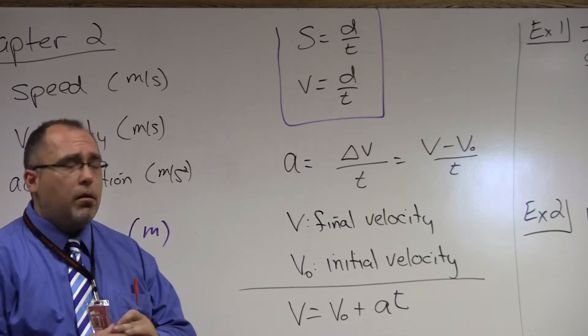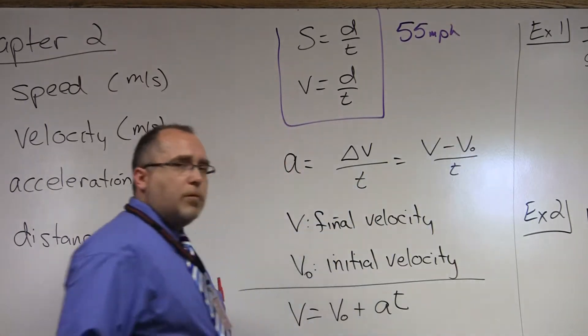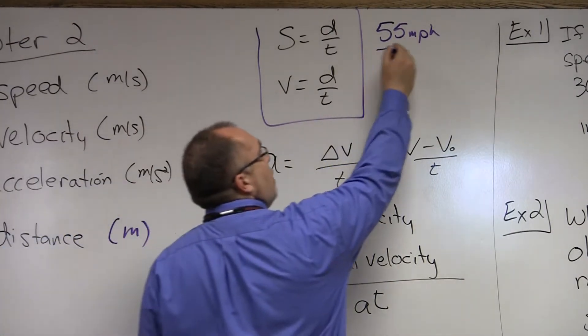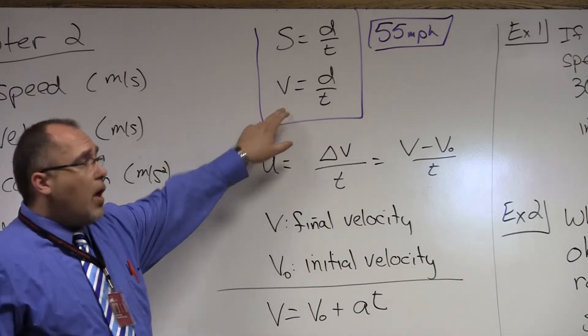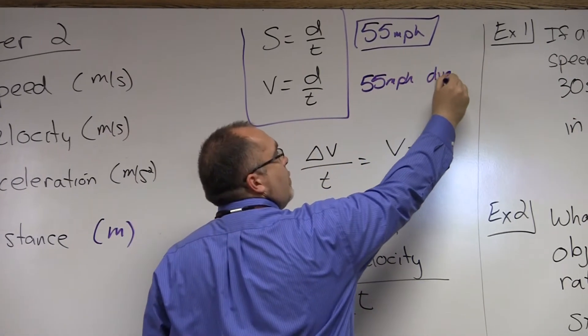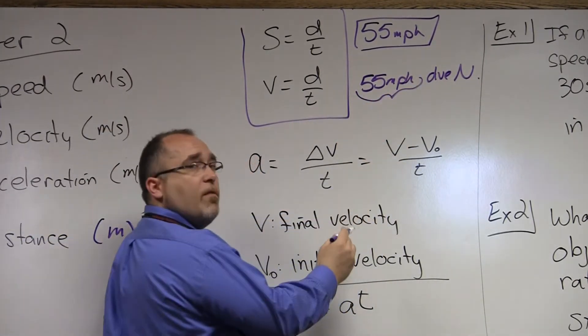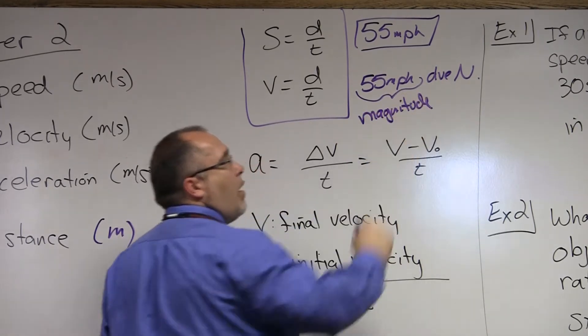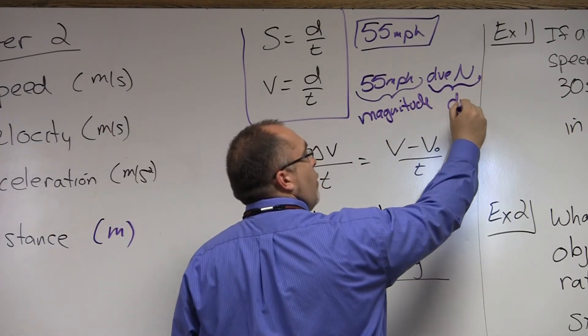For instance, an example of speed would be, say, 55 miles per hour, a common speed limit. That's the speed, because it's a magnitude of 55 miles per hour. That would not be a velocity. Velocity would be something like 55 miles per hour due north. Because we have the magnitude, that being 55 miles per hour, but we also have a direction, that being due north.